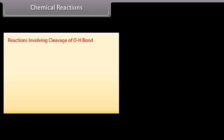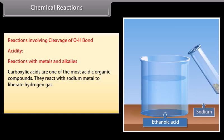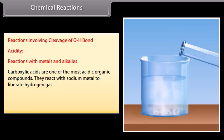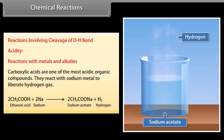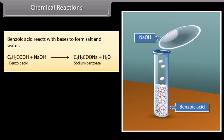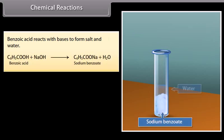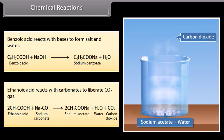Chemical reactions - reactions involving cleavage of O-H bond. Acidity: carboxylic acids are one of the most acidic organic compounds. They react with sodium metal to liberate hydrogen gas. Sodium metal reacts with ethanoic acid and gives sodium acetate and liberates hydrogen gas. Benzoic acid reacts with bases to form salt and water. Ethanoic acid reacts with carbonates to liberate carbon dioxide gas.